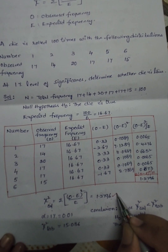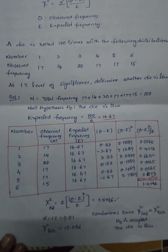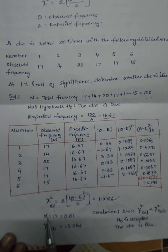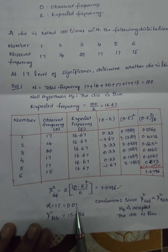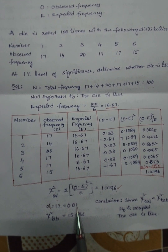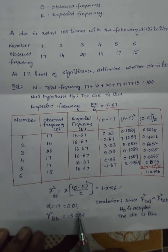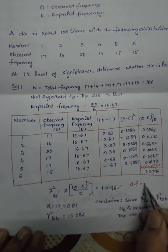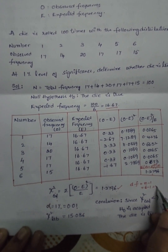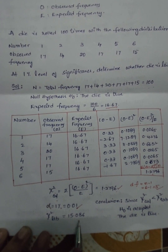This is the result from the calculation. In our question, they have given 1 percent level of significance, represented by alpha, so alpha equals 0.01. There are standard chi square tables available in logarithmic table books, statistics textbooks, or on the internet. There are 6 observations, so the degree of freedom is n minus 1, which is 6 minus 1 equals 5. At 5 degrees of freedom and 1 percent level of significance, the chi square tabulated value from the table is 15.086.